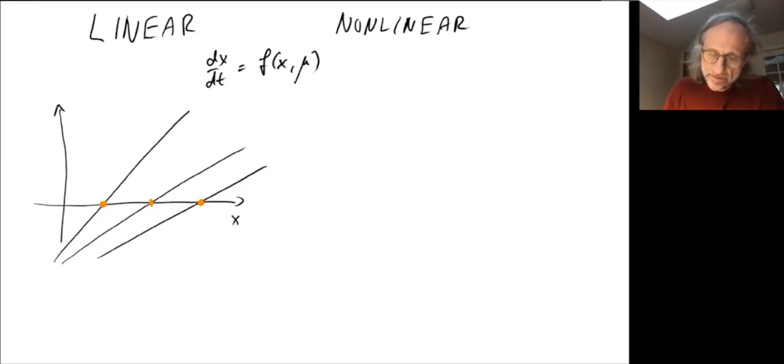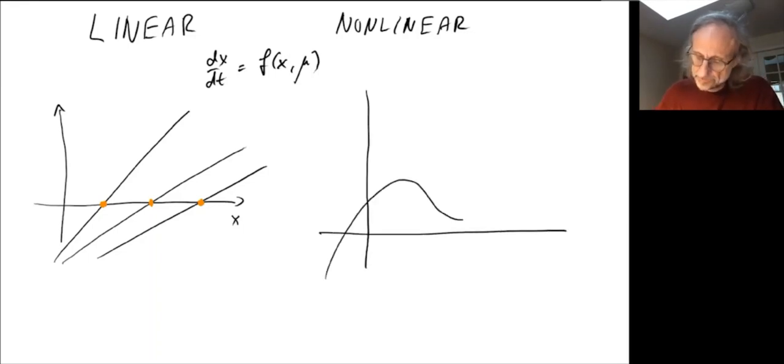In contrast, if you have a nonlinear system, so say we have a function that looks like this. So then I have a fixed point, you'll see that right away, I have a fixed point here. If I now change the parameters, I don't have to do any fancy changes. I could just imagine the curve shifts downward. And then suddenly, I have this fixed point, plus two more fixed points. So the number of fixed points has changed.